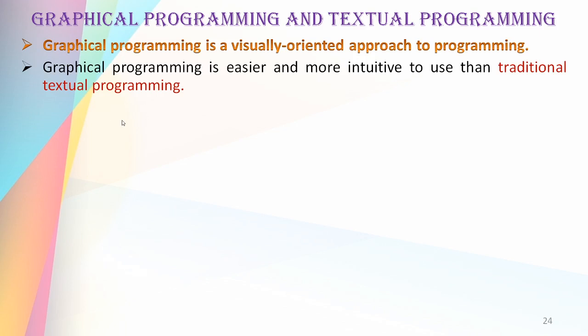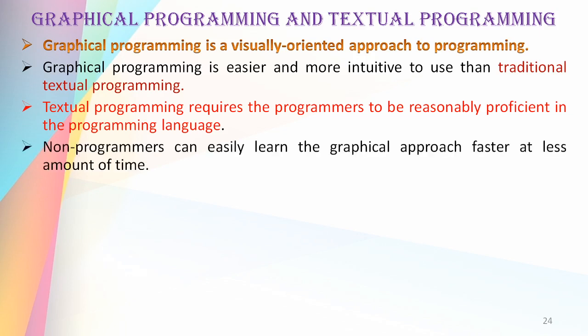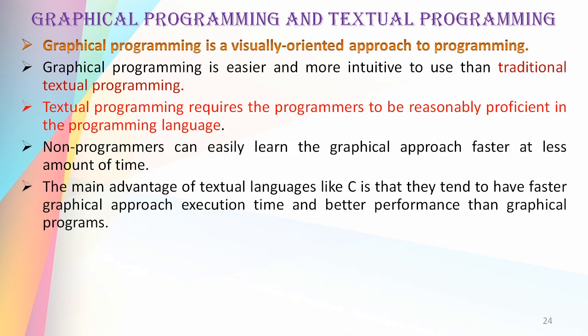Textual programming requires the programmers to be reasonably proficient in the programming language. Conventional textual programming uses specific syntax and instruction sets. Graphical programming, on the other hand, can be learned faster in less time — just icons and drag and drop, so anyone can learn it. No need to be a programmer. The main advantage of textual languages like C is that they tend to have faster execution time and better performance than graphical programs.